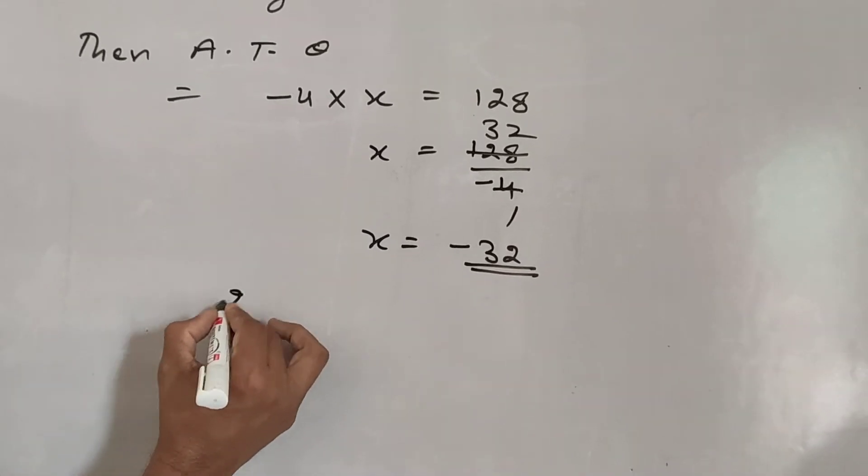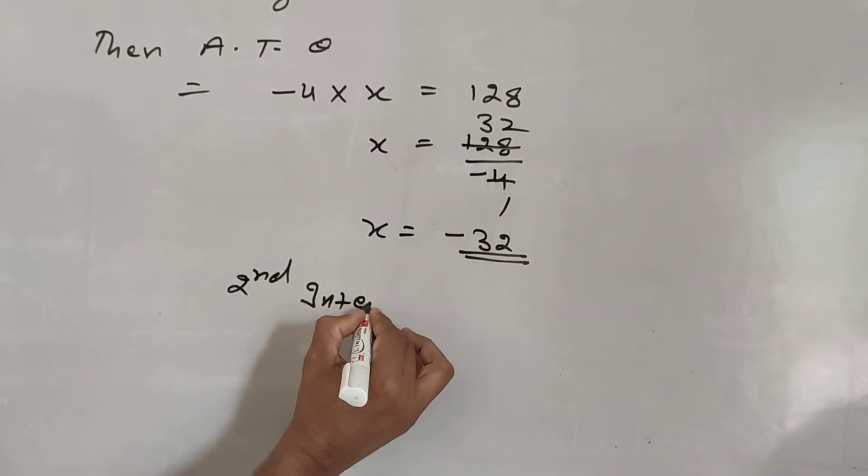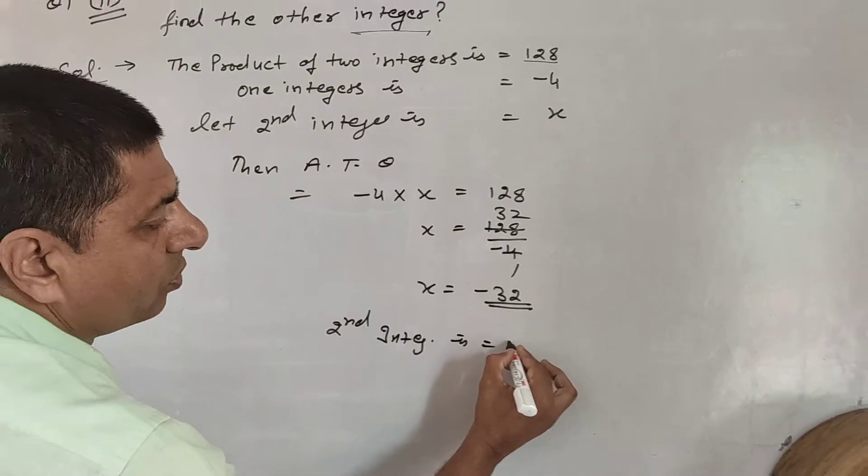So the second integer is equal to minus 32.